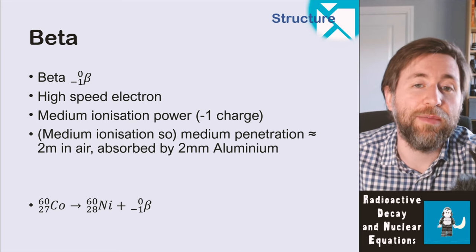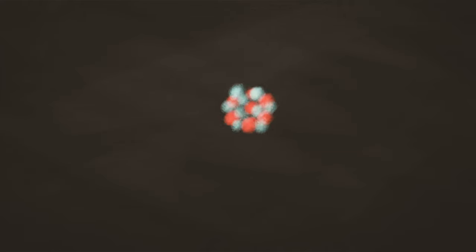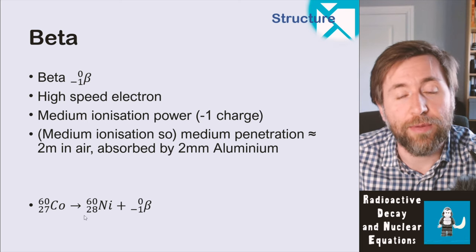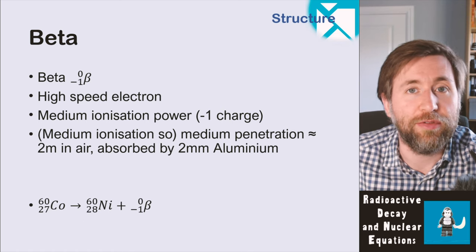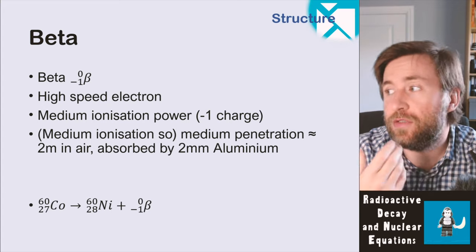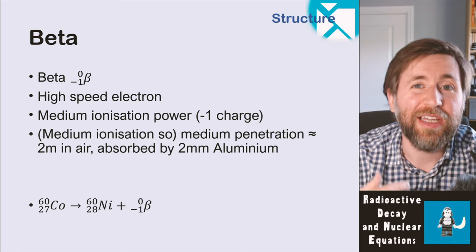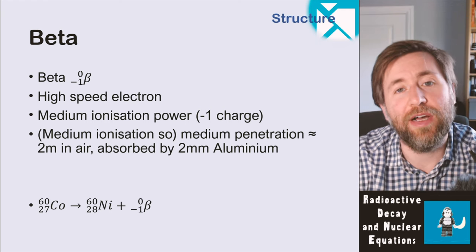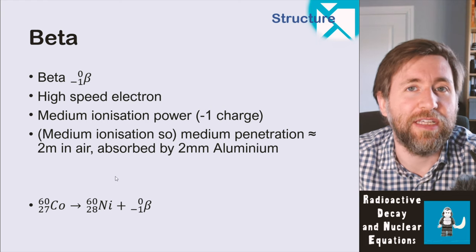Beta is a high-speed electron kicked out from the nucleus. What actually occurs inside the nucleus is a neutron turns into a proton — so we gain a proton, but the mass number doesn't change. It has a medium ionizing power because it has a minus-one charge, so it isn't as charged as the alpha particle. Because it's also moving at very high speeds, it's unlikely to interact with other atoms and doesn't spend much time near them, so it ionizes them less easily.